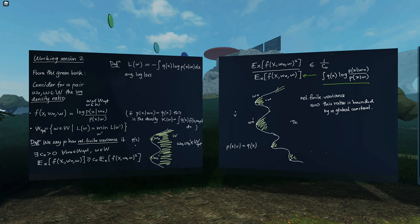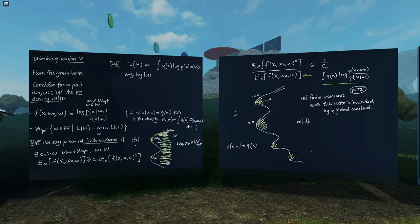What Watanabe shows is that if you have this condition, the first thing to say is that realizability implies relatively finite variance. This definition is on page 72, by the way. He proves that relatively finite variance is implied by realizability.